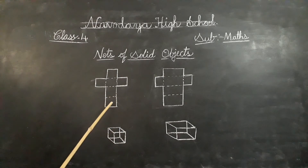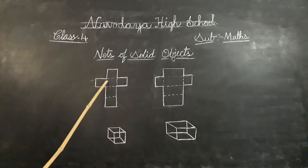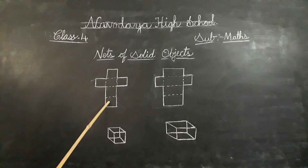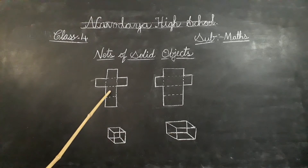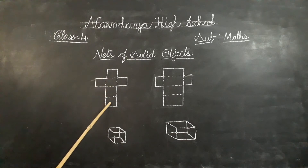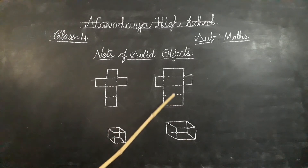Count how many faces are here? One, two, three, four, five, six faces. A cube has six faces and all the faces are square shaped.